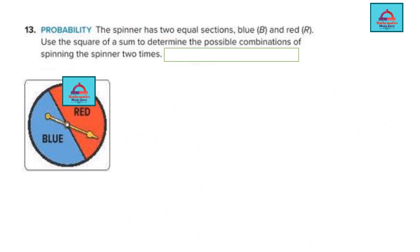Let's solve this question now. The spinner has two equal sections. You can see the spinner has two parts and both are equal. One is blue, one is red. We denote blue with capital B and red with capital R. That's what is given in the question. Use the square of a sum. Square of sum means (a + b)². What is the identity? a² + 2ab + b². Or you can write in this way also. Both are correct. This identity needs to be used to determine the possible number of combinations of spinning the spinner two times.